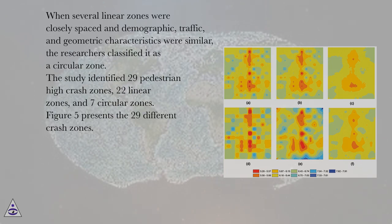When several linear zones were closely spaced and demographic, traffic, and geometric characteristics were similar, the researchers classified it as a circular zone. The study identified 29 pedestrian high crash zones, 22 linear zones, and 7 circular zones.